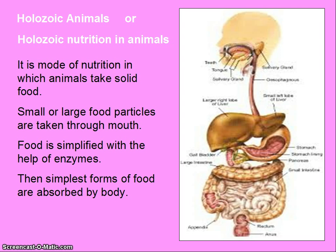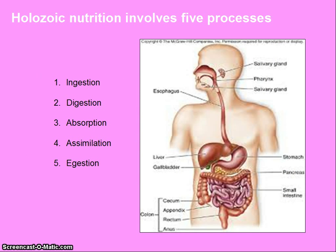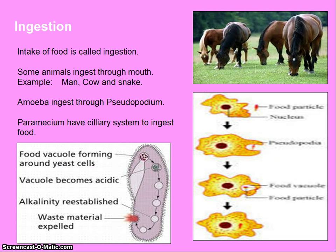In holozoic nutrition, small or large particles are taken through the mouth. Food is simplified with the help of enzymes, and then the simplest form of food is absorbed by the body. Holozoic nutrition involves five processes: ingestion, digestion, absorption, assimilation, and egestion.